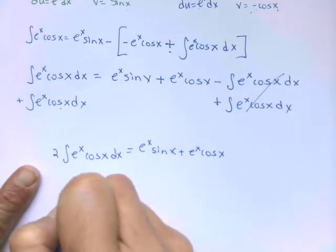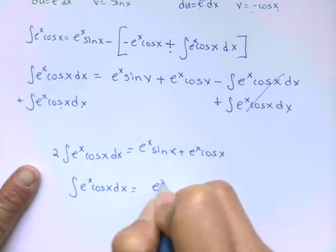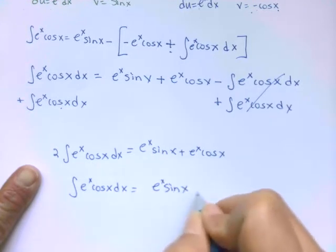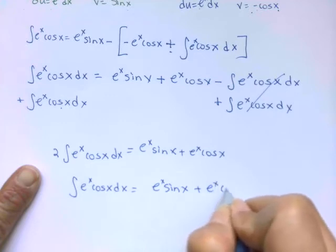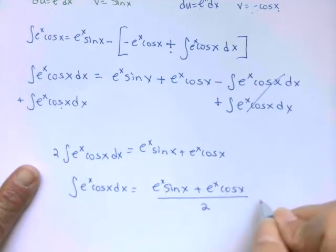So if I just want one of them, I can divide out that two. So the integral e to the x cosine x dx equals e to the x sine x plus e to the x cosine x all over two, plus C.